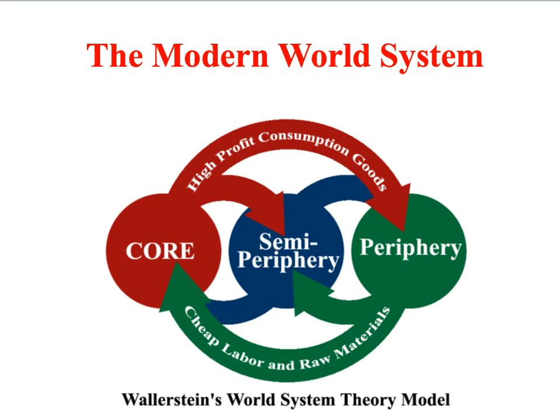At the other extreme within this system we have the periphery countries, which comprise most of the developing world. Peripheral countries are characterised by weak governments, often under the control of local elites who have been paid off or corrupted by the core nations. Periphery countries are poor and their economies are mainly based on primary economic activity — extracting materials from the earth through industries such as mining and agriculture. Their natural resources flow into the core and, to some extent, the semi-periphery, along with profits.